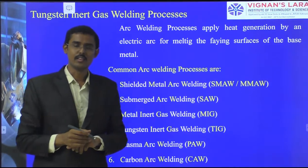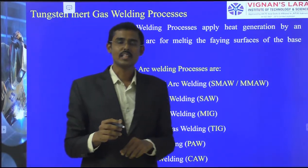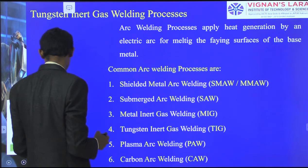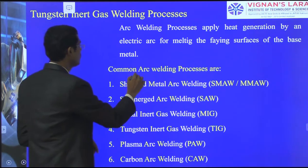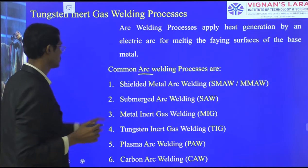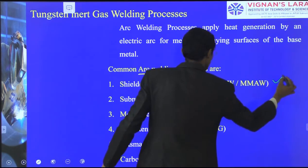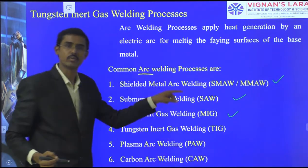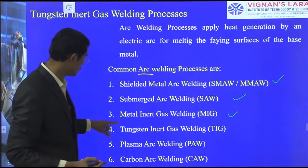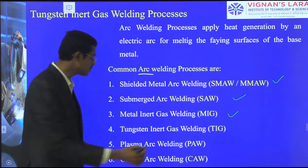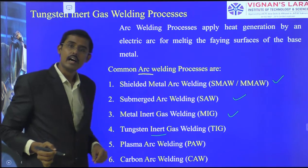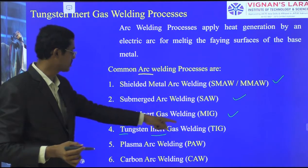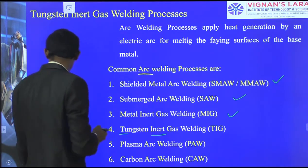Welcome to the session. In this class we will talk about the tungsten inert gas welding process. We have already seen arc welding methods — discussions of SMAW, submerged arc welding, and metal inert gas welding process. Continuing with that, we have to see the tungsten inert gas welding process, where we use inert gas and a non-consumable electrode of tungsten. Therefore it is named TIG welding.